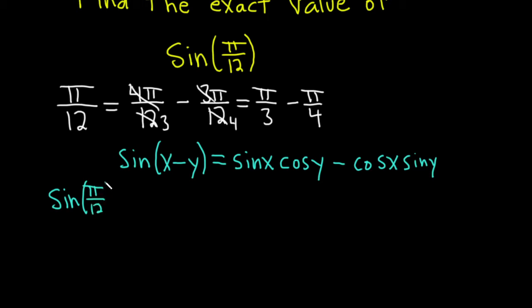and that's the same thing as the sine, and we said we wrote it as pi over 3 minus pi over 4. So pi over 3 minus pi over 4.